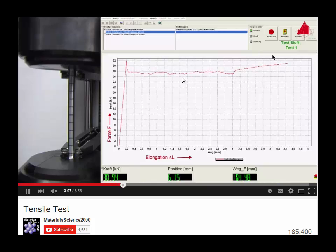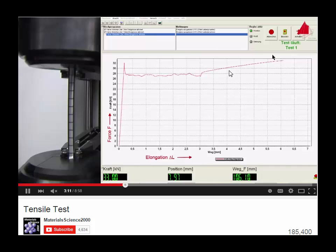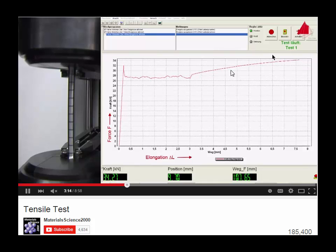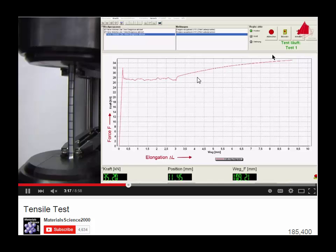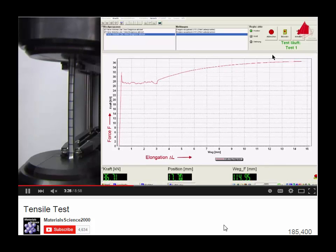Now, at some point, that yielding comes to an end, and the specimen begins to gain strength again. This is the phenomenon we call strain hardening. And the strength will continue to increase until an ultimate point is reached.